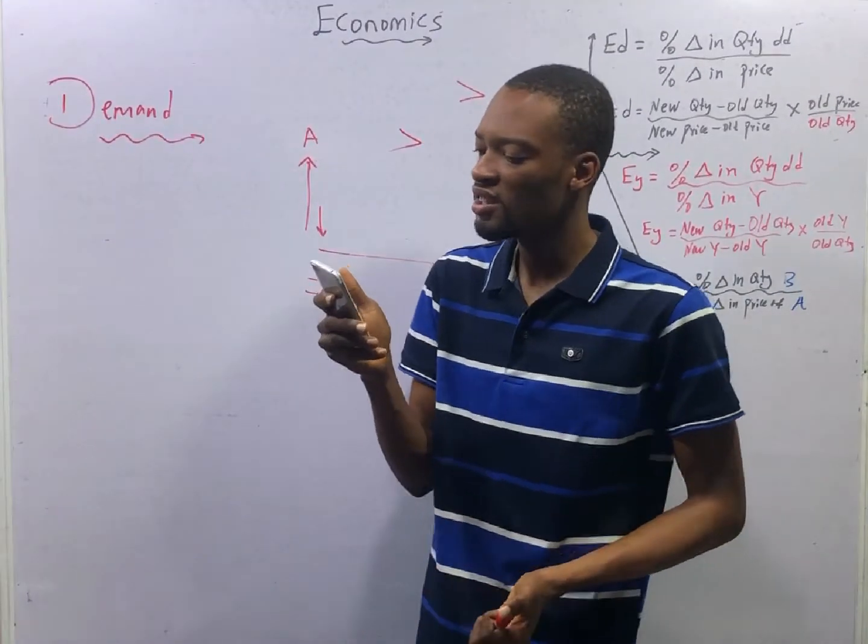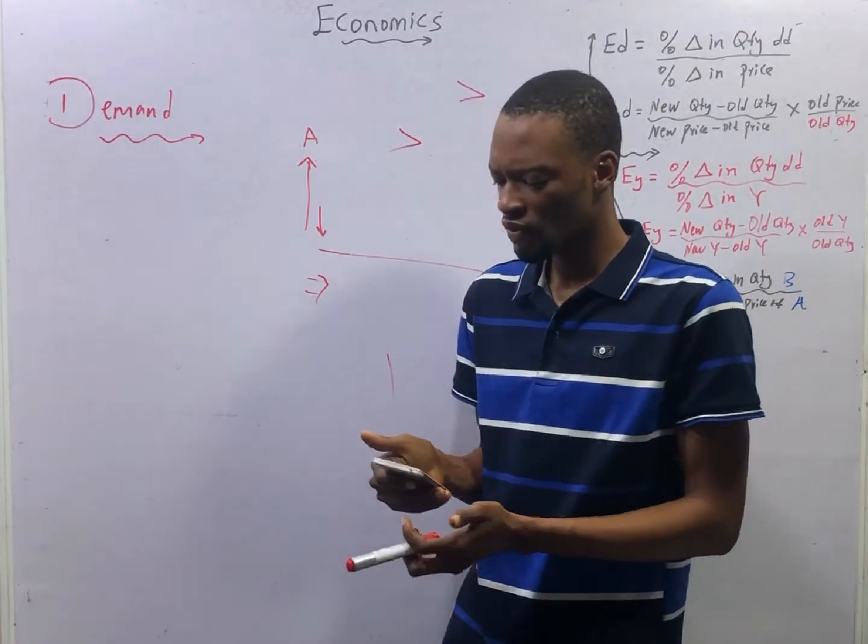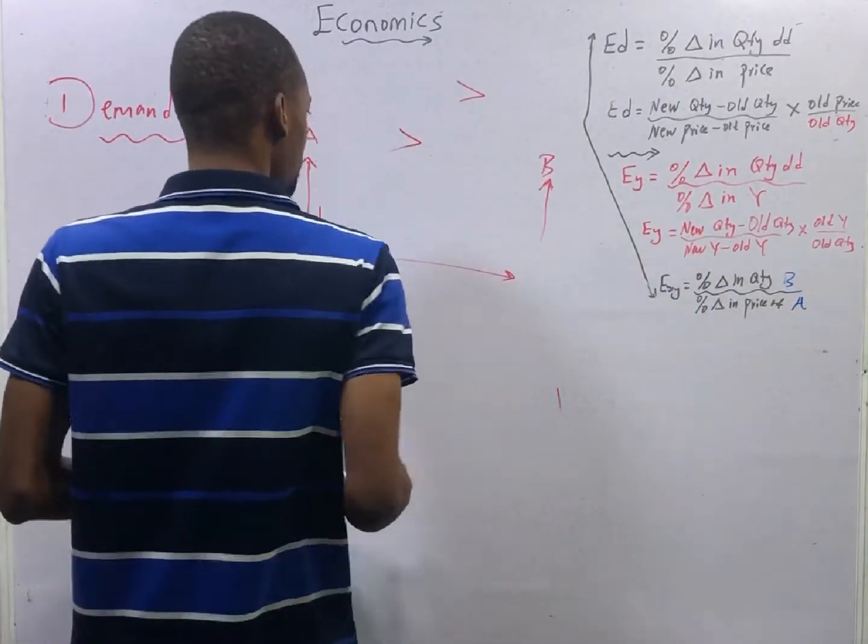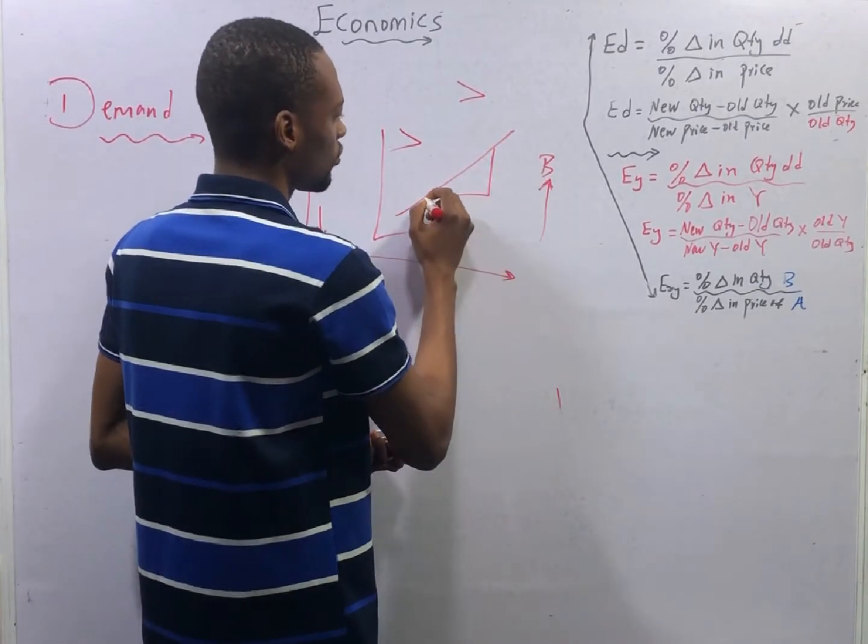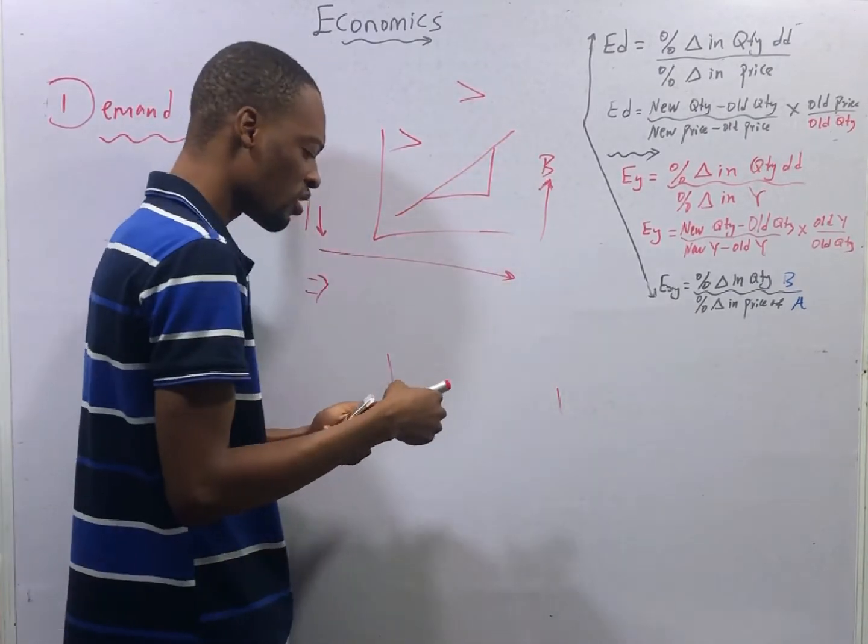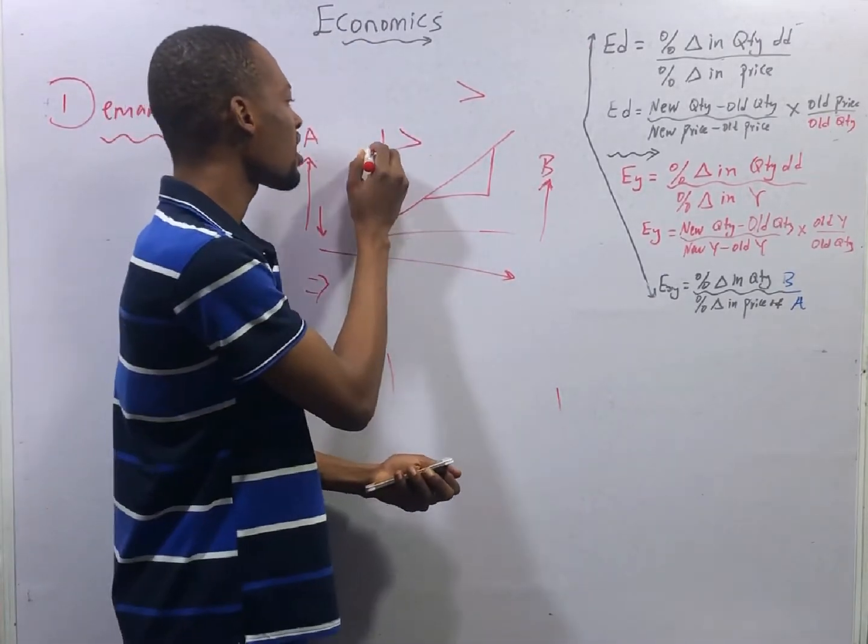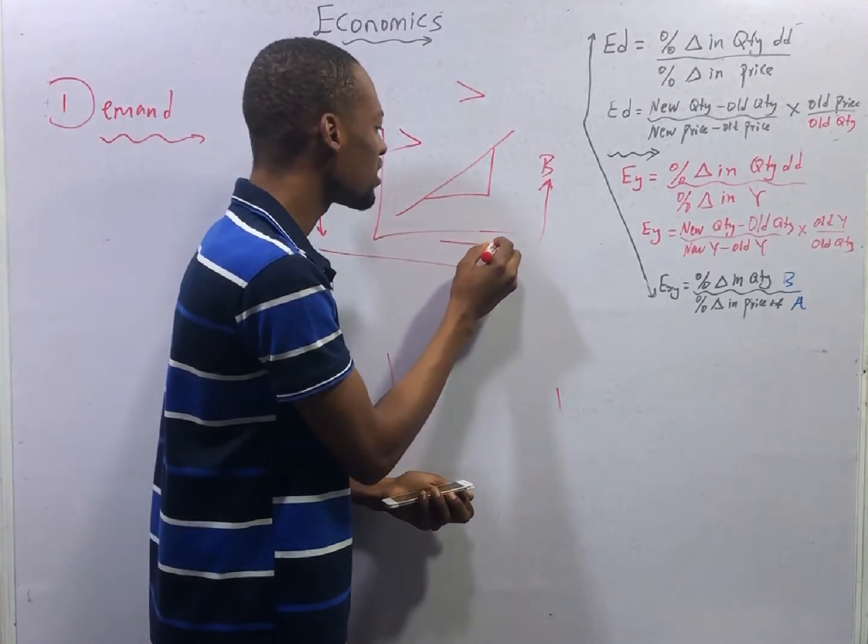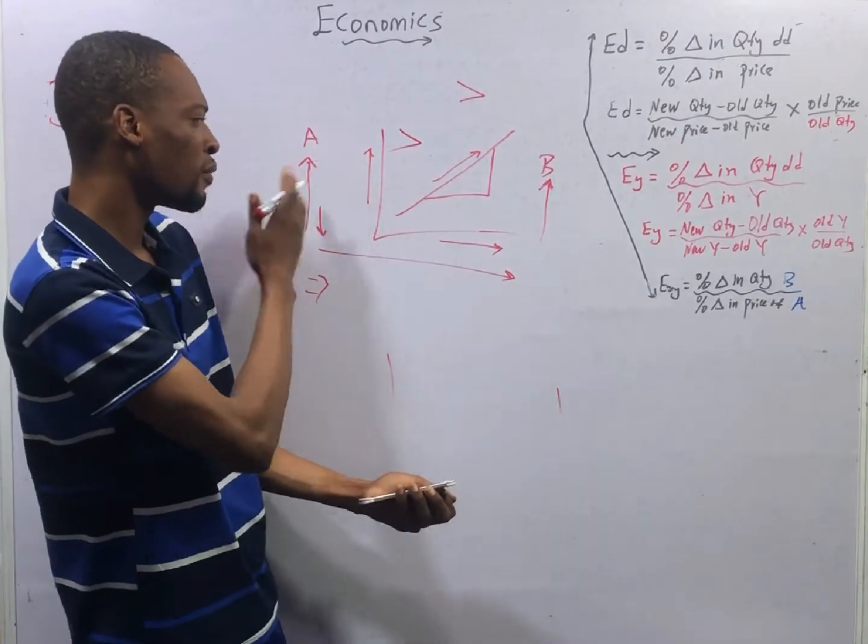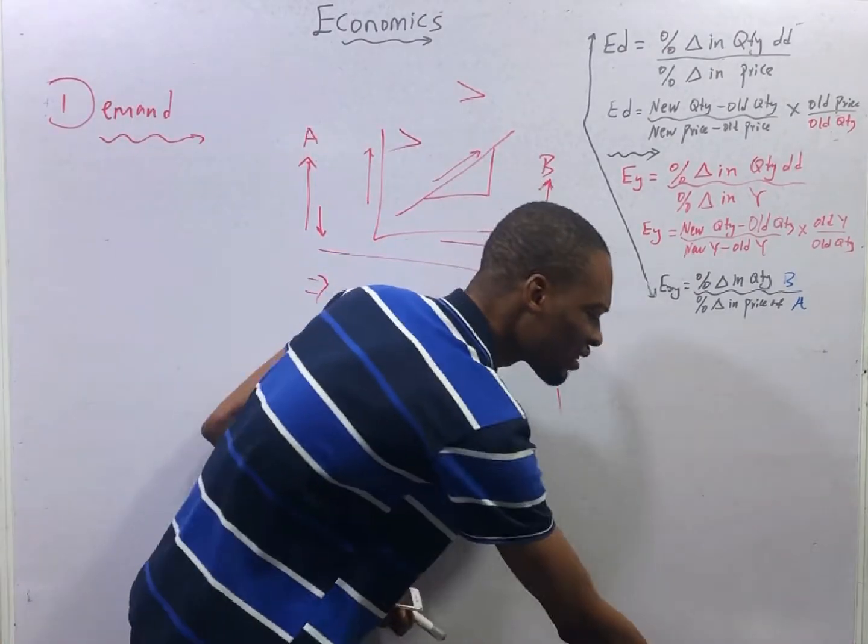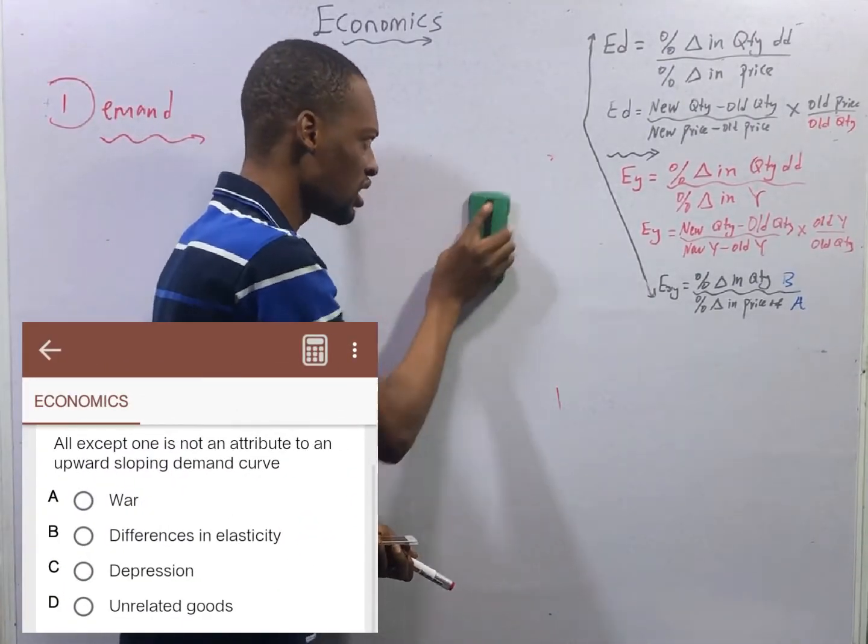All, except one, is not an attribute to an upward sloping demand curve. Upward sloping demand curve means as the price is increasing, the quantity demanded is also increasing. So, this is sloping upward from left to right. What will make quantity to increase, despite the fact that price is also increasing? One,